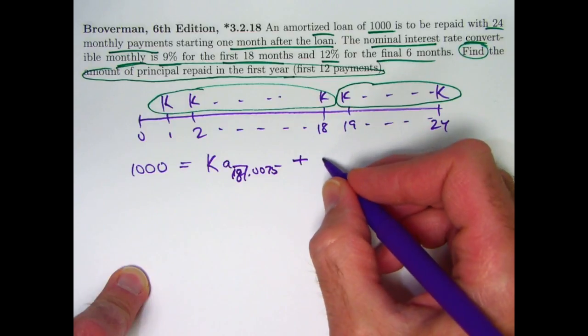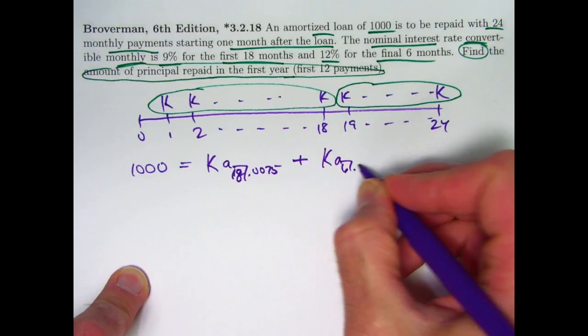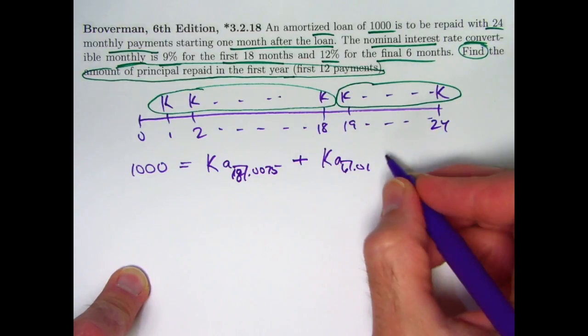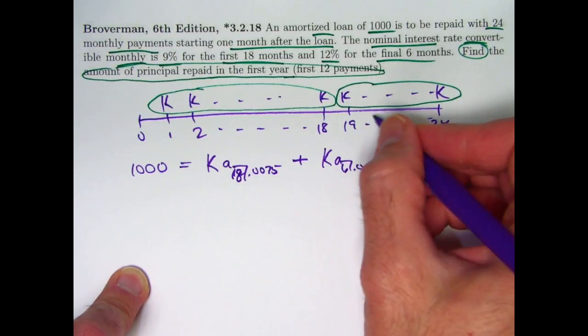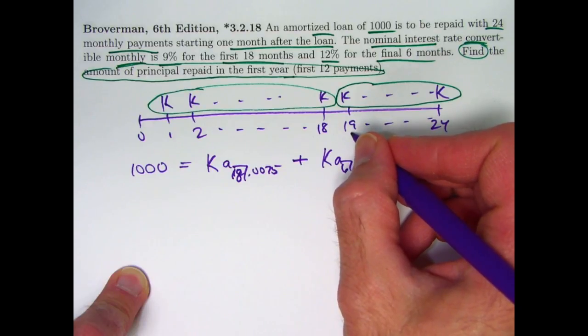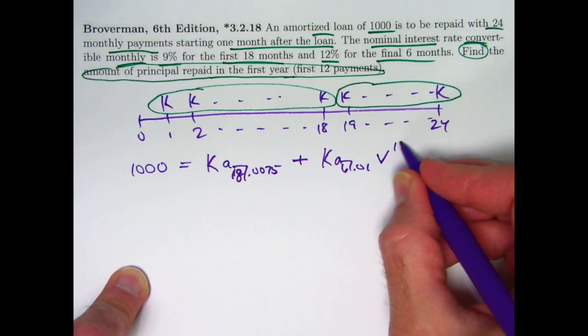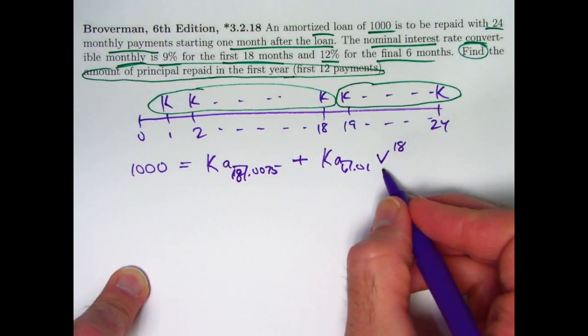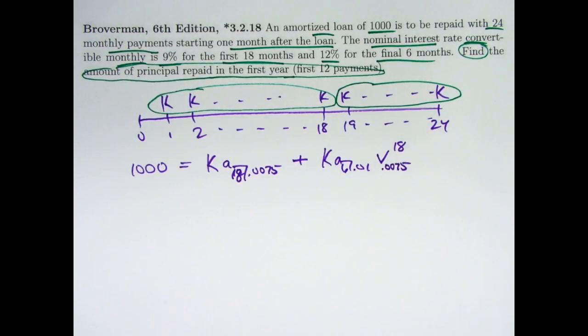And with the last six payments, we've got K times a-angle-6 at 0.01 (12% divided by 12), but then we also have to discount that by 18 months because this is going to give the present value for the stream one period before the first payment there at time 19. So I have to multiply by V to the 18th where this V corresponds to the interest rate of 9%. So that will help us figure out K, which is probably a good thing to help us finish the problem.